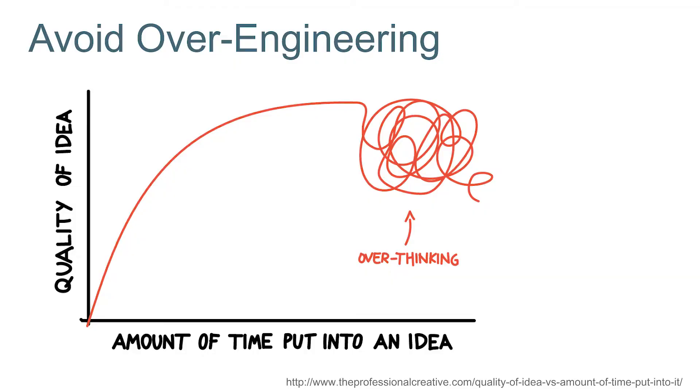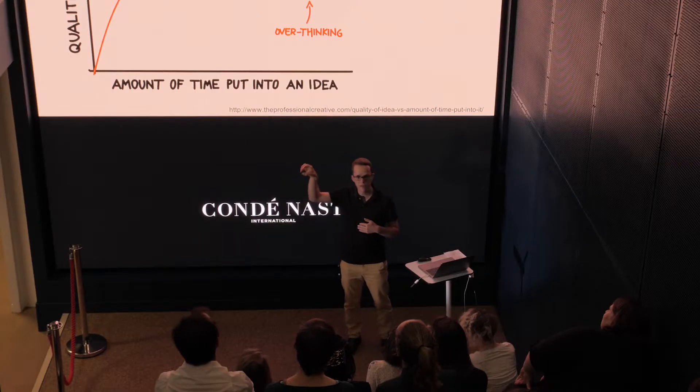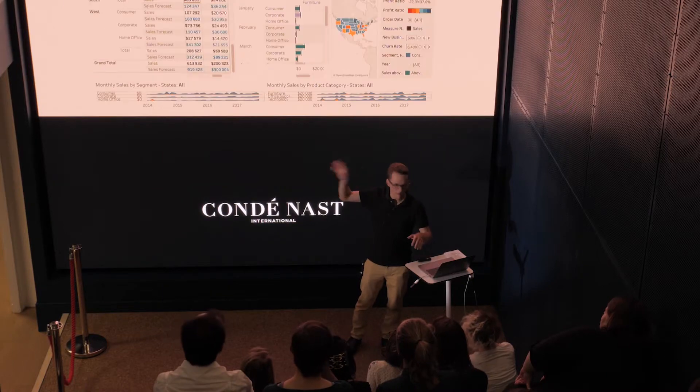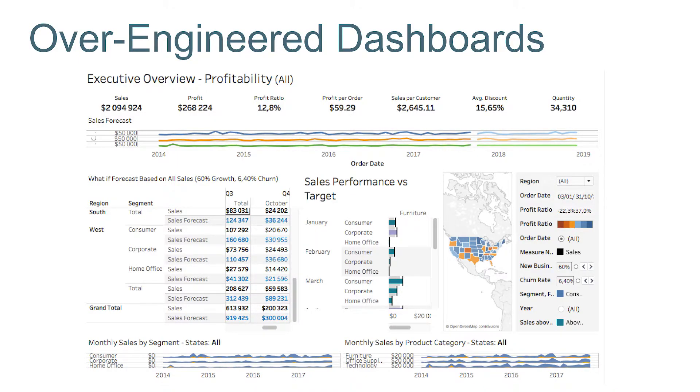Often, especially when you come from a very analytical background, you tend to over-engineer solutions. Your client wants to see this, but you think it would actually be great if you could show this and this and that and this and that. So we often end up over-complicating things quite a lot. We follow this line most of the time — on the axes: quality of the idea and the amount of time put into the idea. The quality increases quite exponentially, but then you get to this whole lot of mess. There is a cut-off point where the more time you put in actually becomes worse.